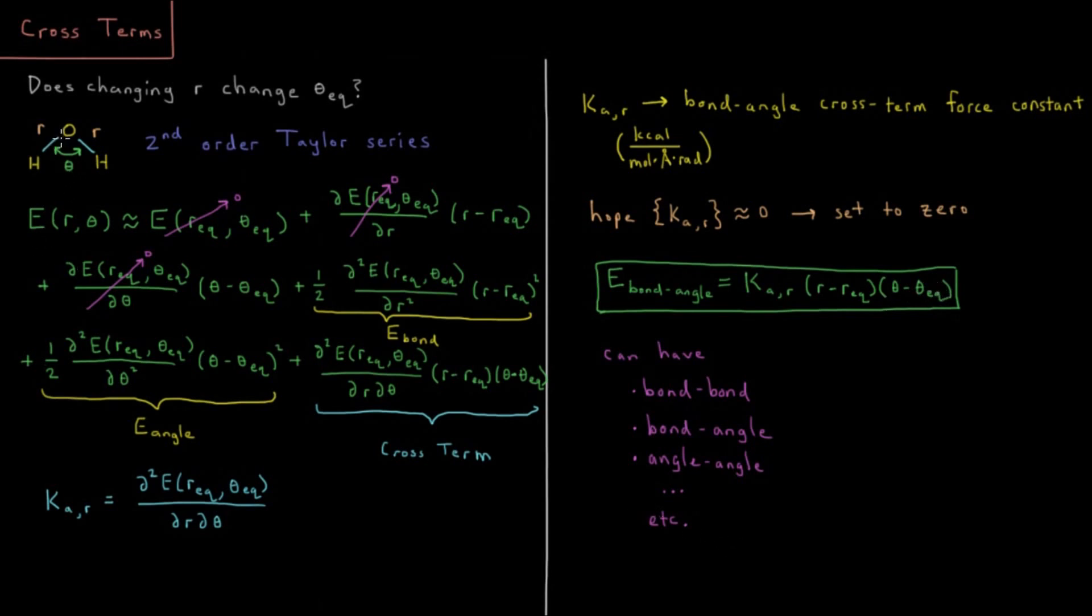So this example was for the cross term between a bond length and a bond angle. But we could also have other kinds of cross terms, we could have cross terms between two different bonds, we could have cross terms between a bond and an angle between two angles, or maybe other different types of structural elements in molecular mechanics. The sky is the limit, your only limit is how much patience you have and how quickly you want your energy function to be able to be computed.